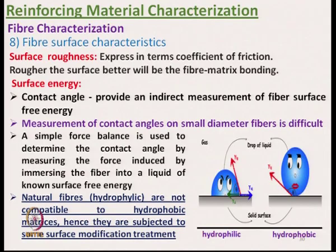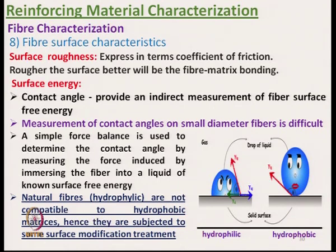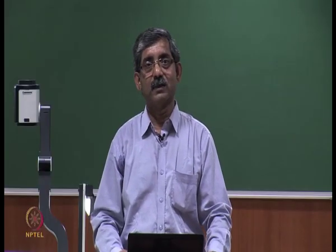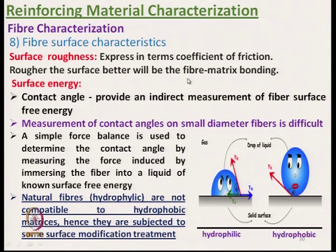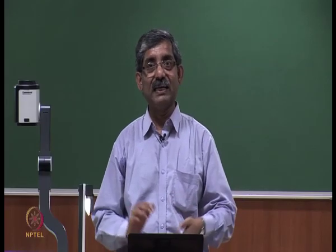The next characteristic is the surface characteristics of fibre, which can be expressed as surface roughness. Surface roughness of fibres is extremely important for composite manufacturing because it expresses the coefficient of friction. The rougher the surface, the better will be the fibre-matrix bonding — at least physical bonding will be there through the keying effect.